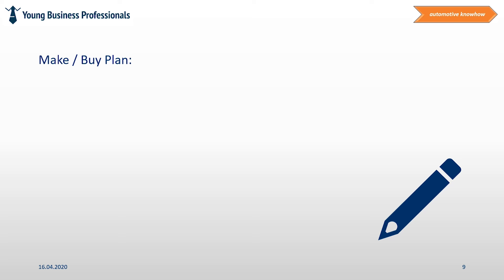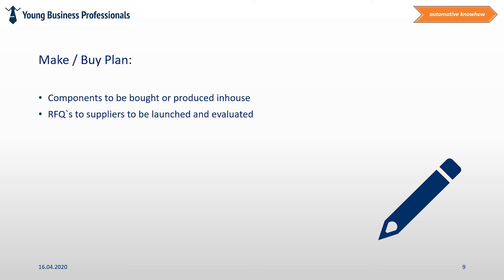Make or buy plan. In parallel to reaching the design freeze, the team is thinking about the fact if tools, equipment and single parts will be produced internally or bought from suppliers. RFQs with suppliers will be summarized and compared with internal costing. So within upcoming phase three, a group of decision makers can make a decision where to order which equipment or if to produce something internally is more reasonable.